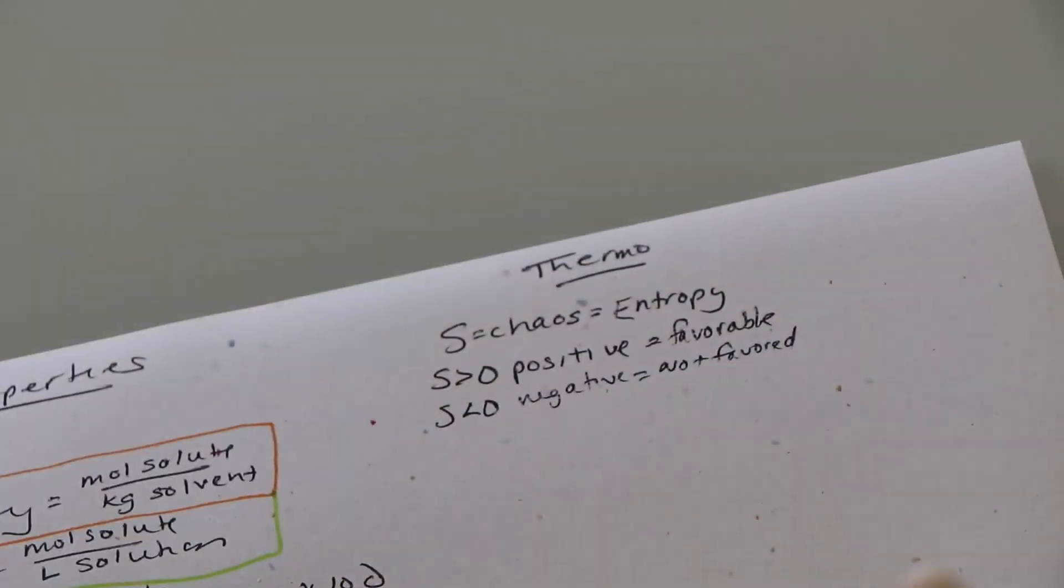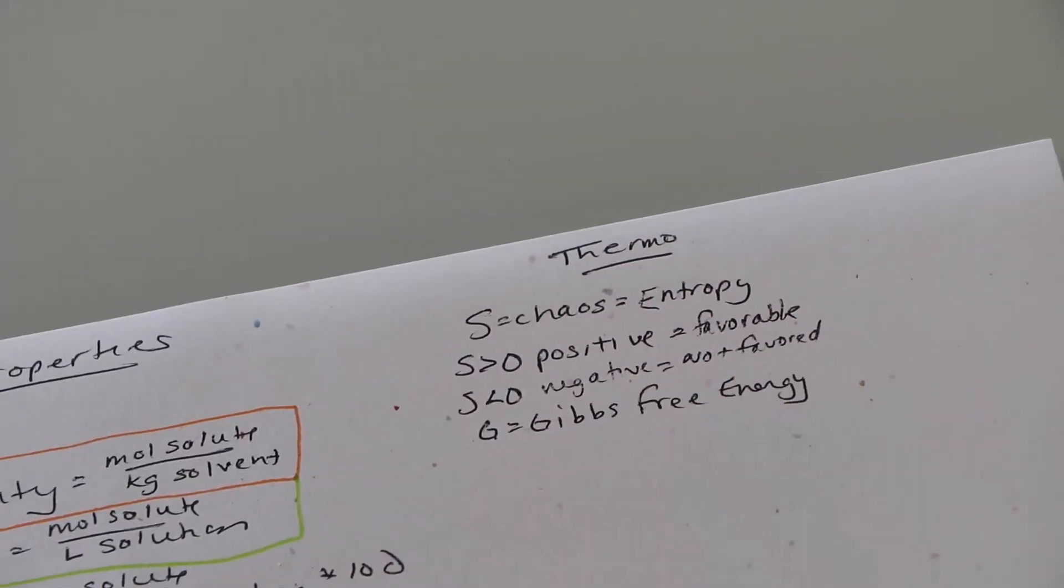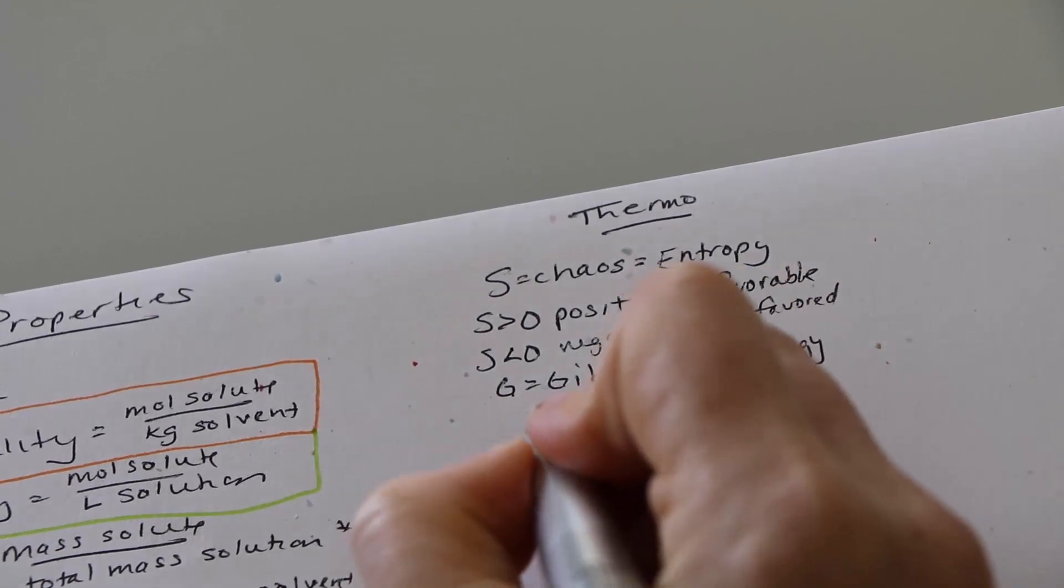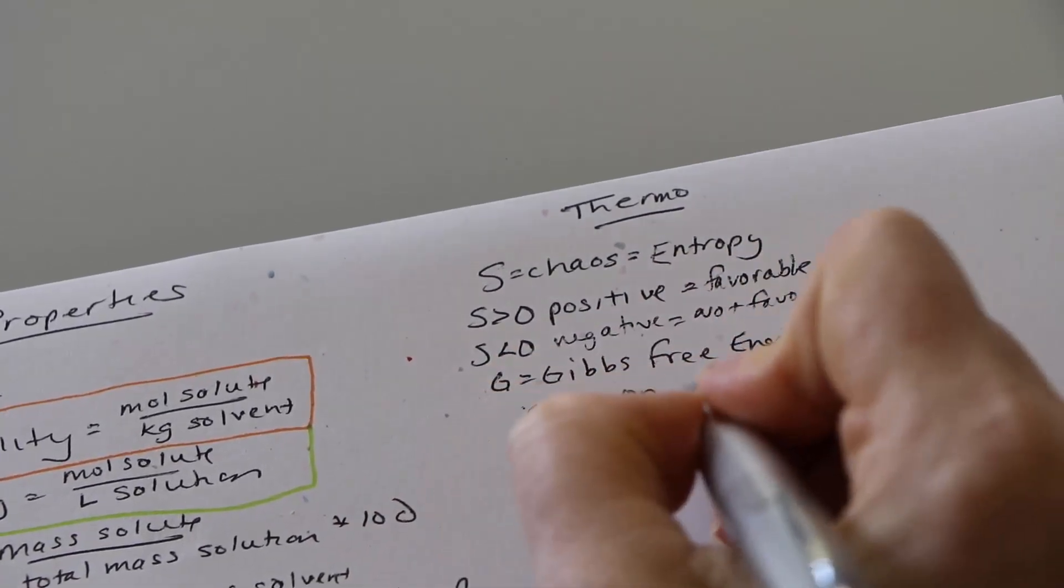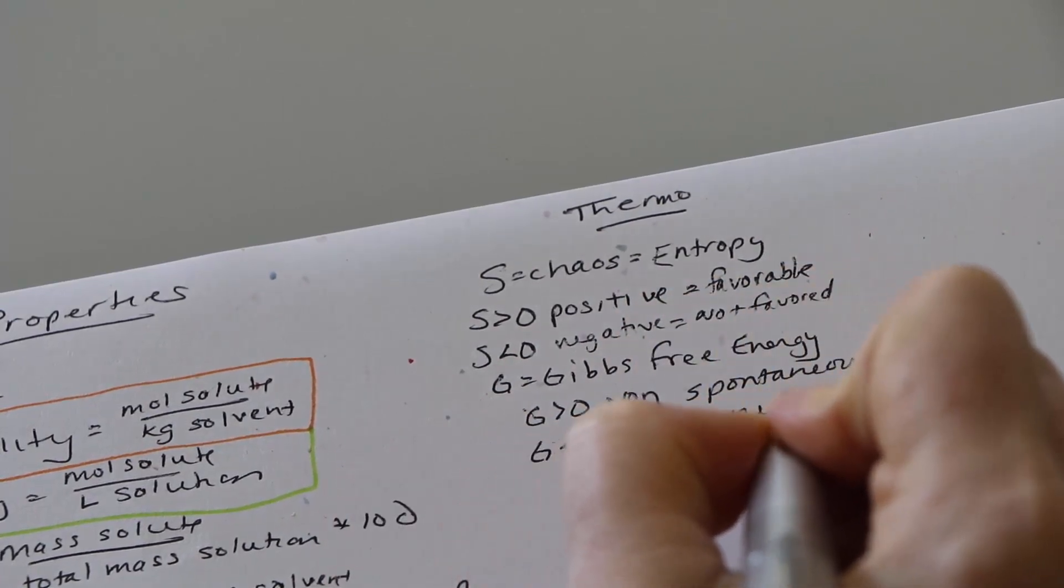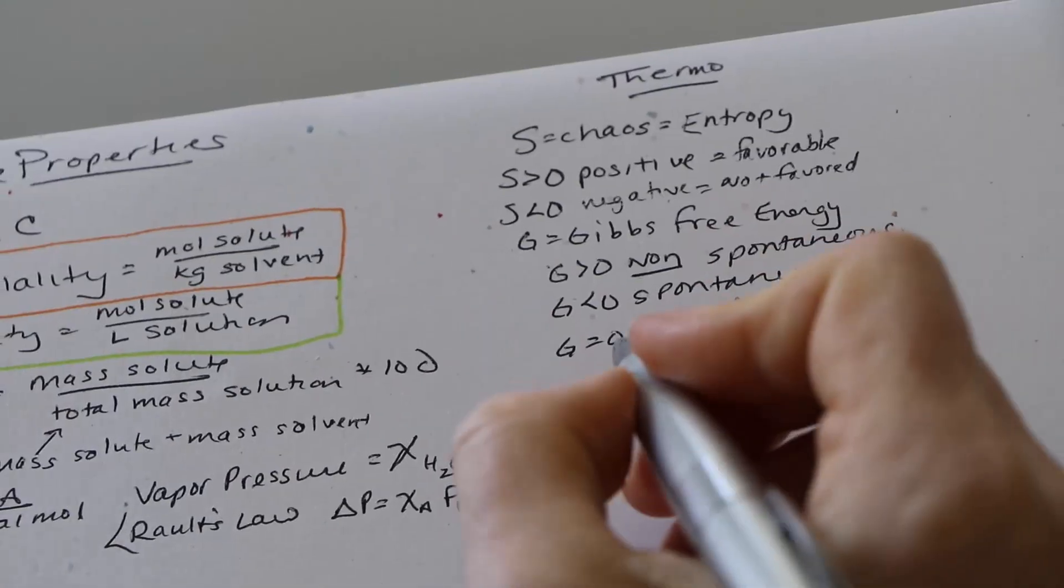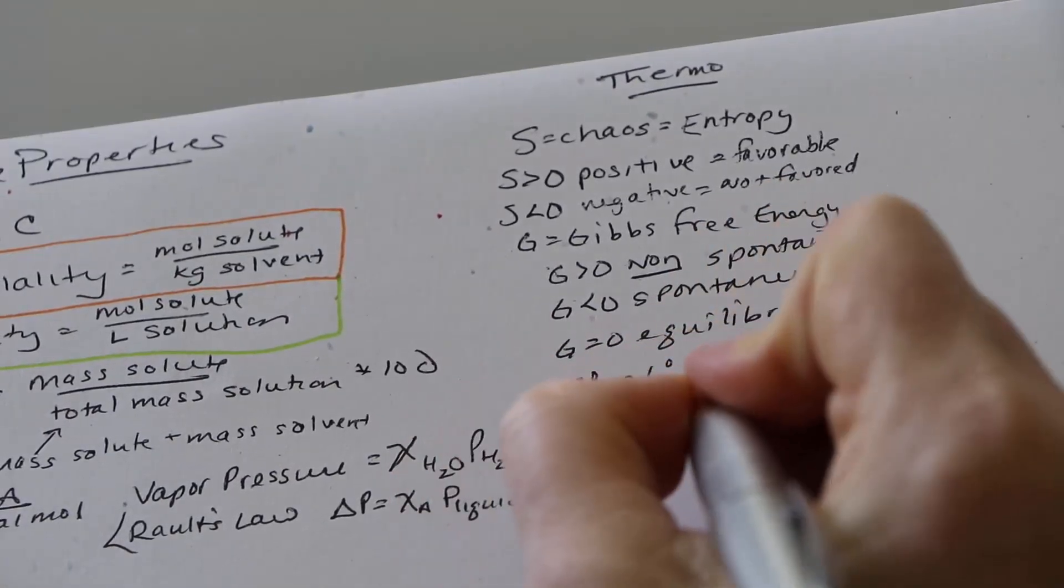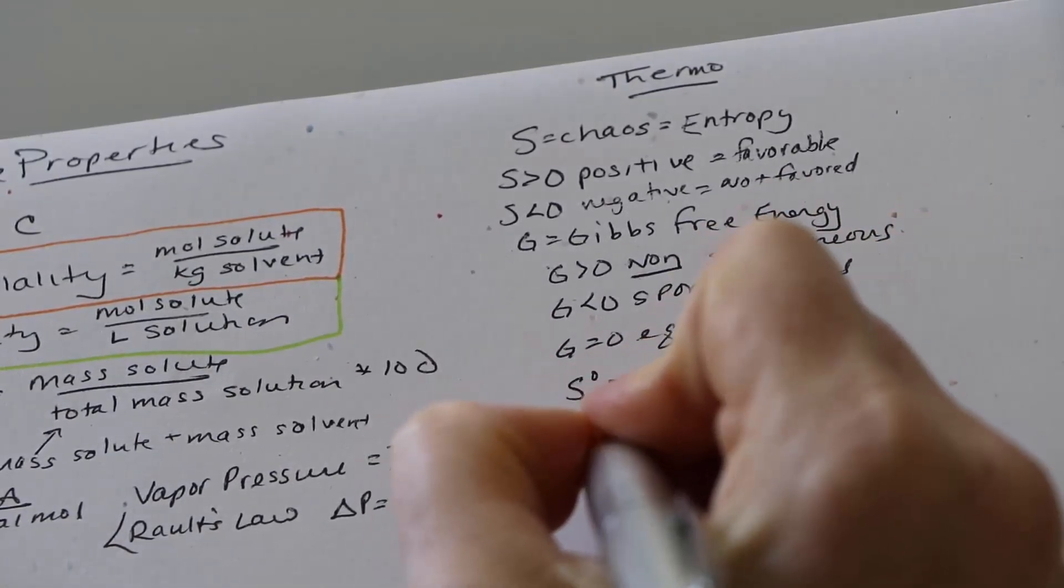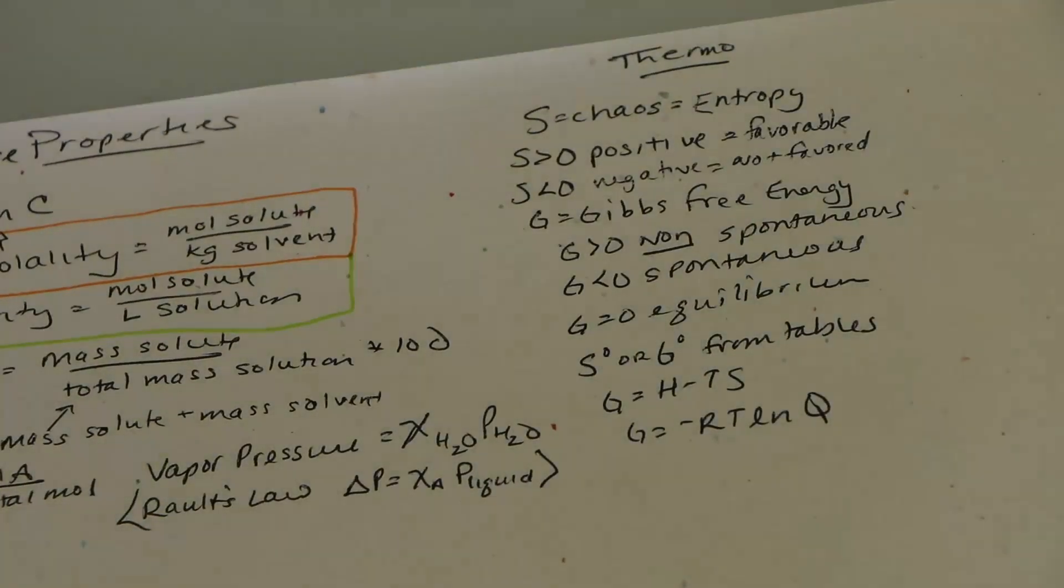So then we're going to move on to thermo. We have S which is the chaos theory and that is your chaos function and that is entropy. When S is greater than zero or positive it's favorable. When it's less than zero or negative it is not favored. G is your Gibbs free energy. When it is positive it is not spontaneous. But G being negative or less than zero is spontaneous. When it equals zero it's at equilibrium.